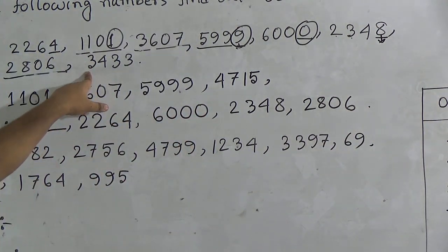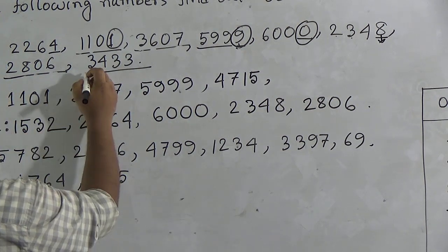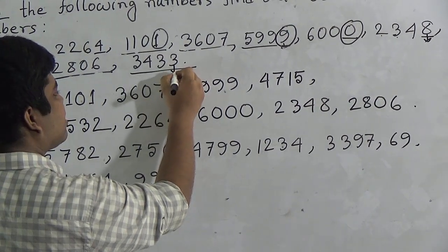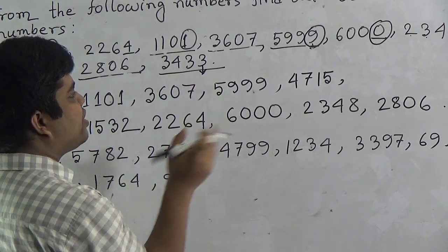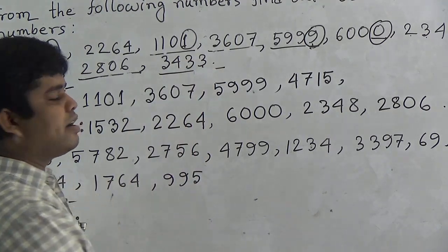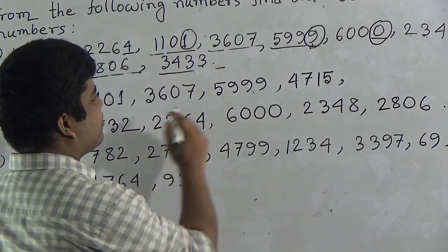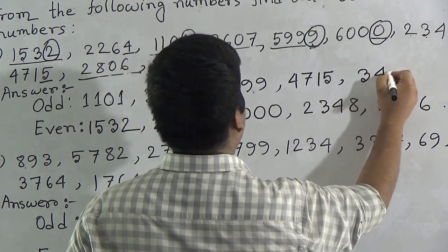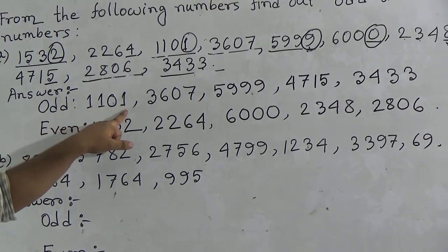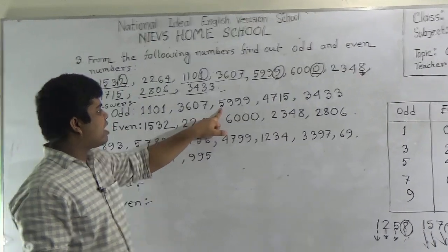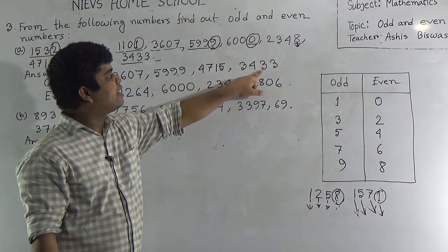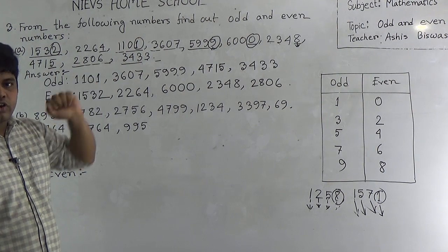Our next and last number is three thousand four hundred thirty-three. The ones place digit is three, which is an odd number. So three thousand four hundred thirty-three is odd, and it is written in the odd number section. Students, notice: one thousand one hundred one, three thousand six hundred seven, five thousand nine hundred ninety-nine, four thousand seven hundred fifteen, and three thousand four hundred thirty-three are odd numbers from the following numbers.